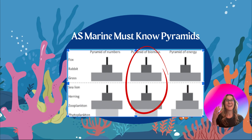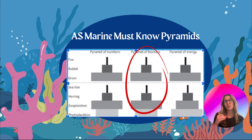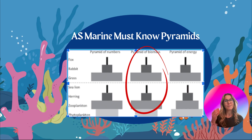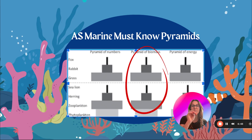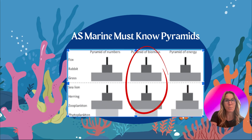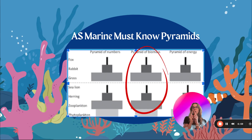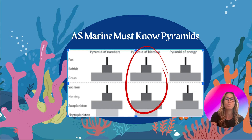Now, the must-know pyramids. For ACE Marine, pyramids are drawn as rectangular boxes — not triangles. The rectangular boxes should always be the same height; between trophic levels one, two, three, and four they should all be the same height. The pyramid of numbers tells you how many organisms there are. The pyramid of biomass can be inverted, meaning we can have smaller bars at the bottom and wider bars at the top.